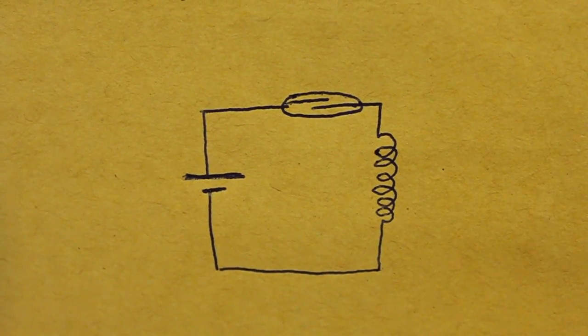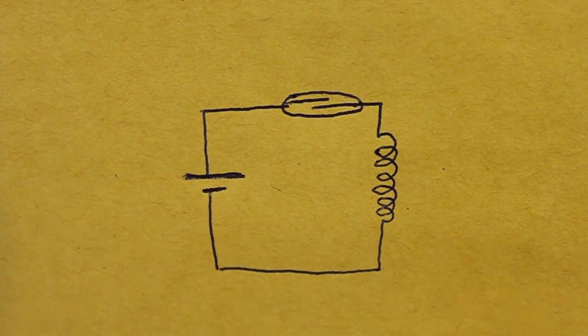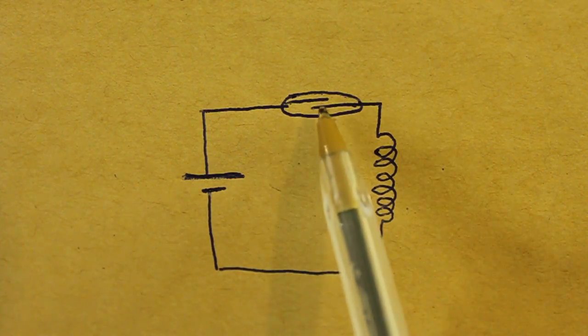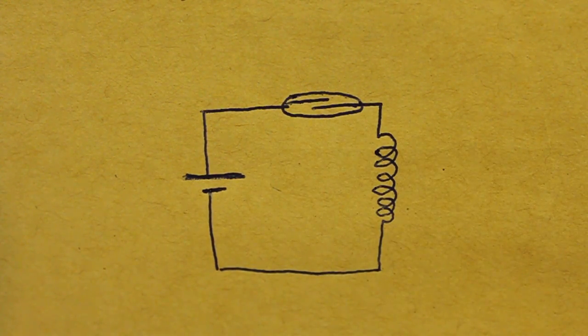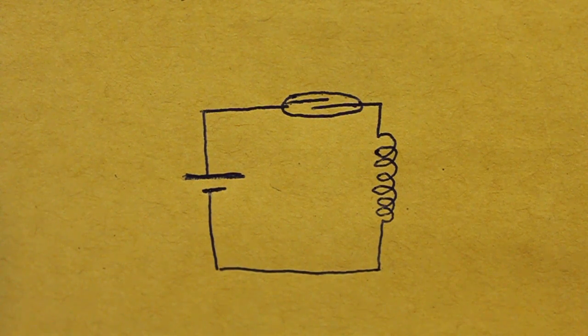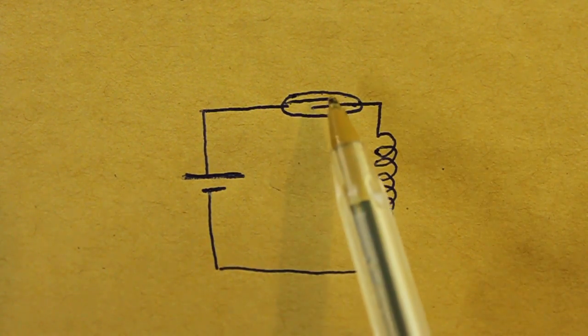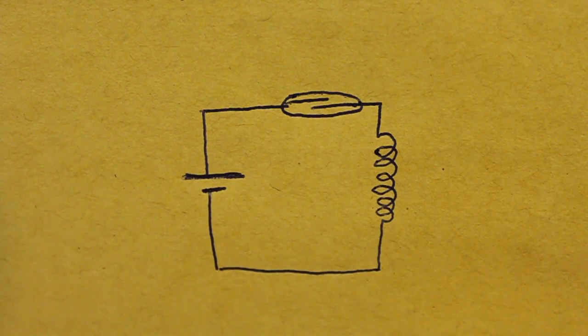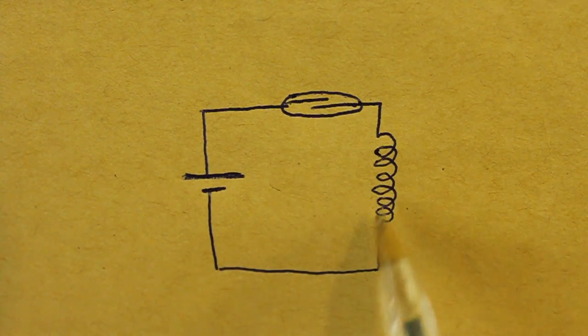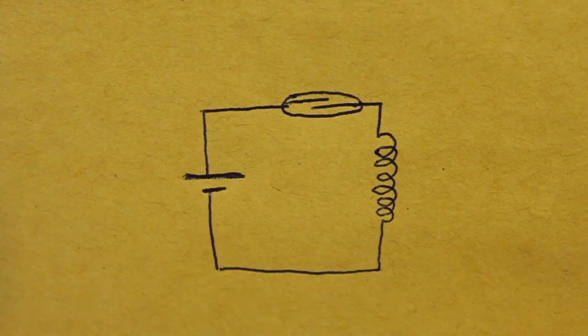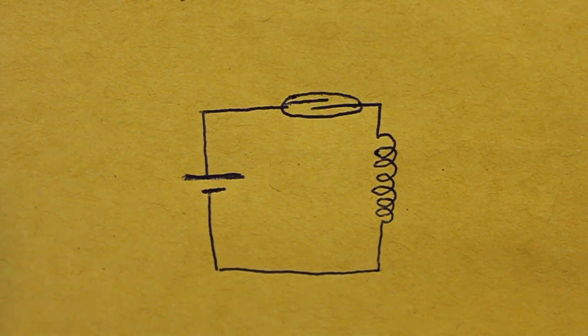The electrical diagram is super simple. This is our battery and we have the magnetic switch and the coil in series. Remember that when the magnet of the rotor passes near the magnetic switch, it closes and then the current can flow through the coil and then it becomes an electromagnet.